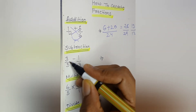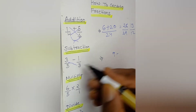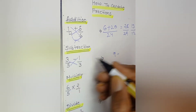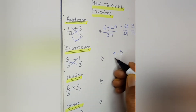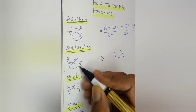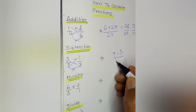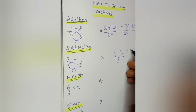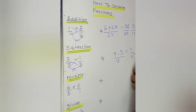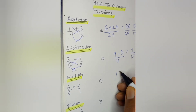Now let's see subtraction. 3 into 3 is equal to 9, 5 into 1 is equal to 5, minus 5 upon 5 into 3 is equal to 15. So we have to solve this: the answer is 4 upon 15.